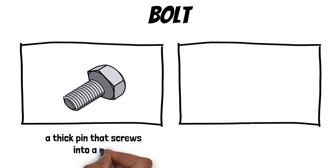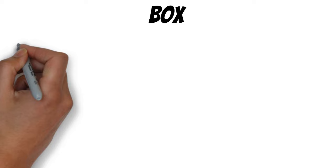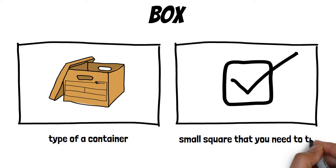Bolt: the first meaning is a thick pin that screws into a nut, and the second is a flash of lightning. Box: the first meaning is a type of container, and the second is a small square that you need to tick.